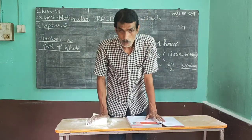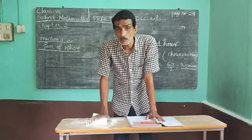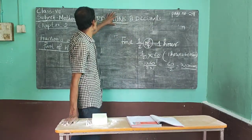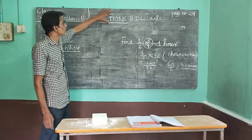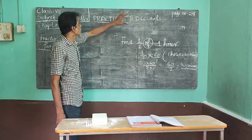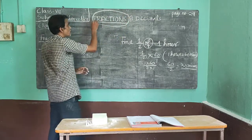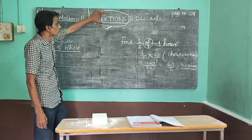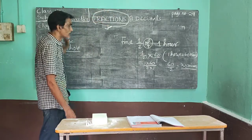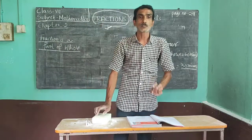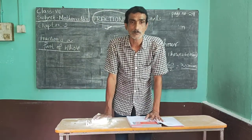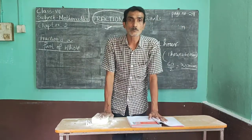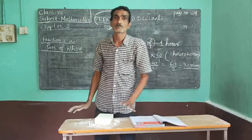I hope you understood the concept. Now one time revision — what we read today: lesson 2, chapter name is fractions and decimals. We read about the fraction part only — this year has two videos. In the first video, you got the concept of fraction: what is fraction, types of fraction, addition, subtraction, multiplication, and division with problem concepts. I hope you understood this video. Stay safe and stay at home.